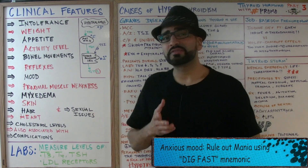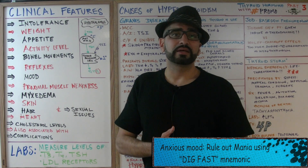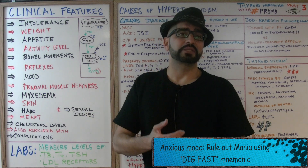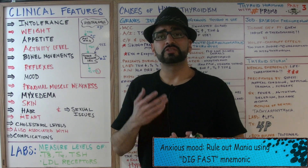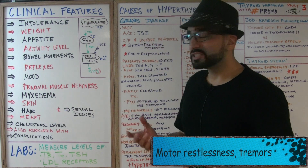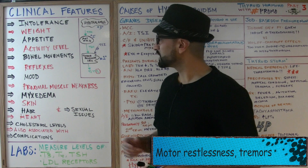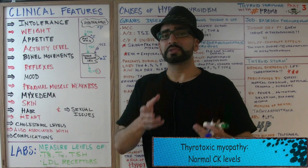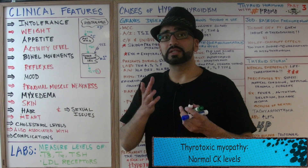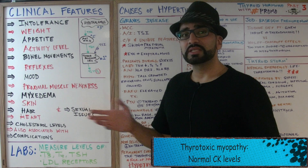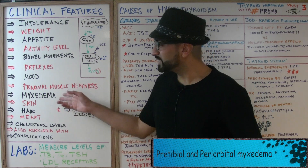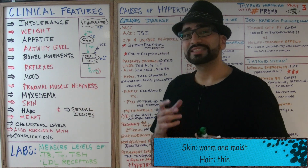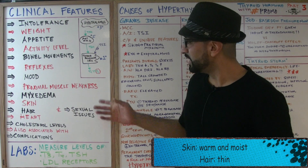Think fast, fast, fast for everything in hyperthyroidism. Reflexes are brisk. Mood is very anxious — you want to rule out mania. You'll see features like distractibility, irritability, loss of concentration, being very talkative, and lots of restlessness. There are also tremors. Regarding proximal muscle weakness: in hypothyroidism we called it hypothyroid myopathy; here we call it thyrotoxic myopathy. In hyperthyroid patients, CK level will be normal.